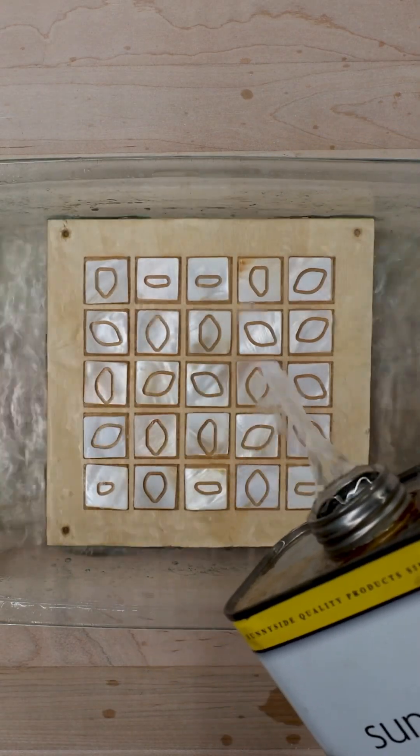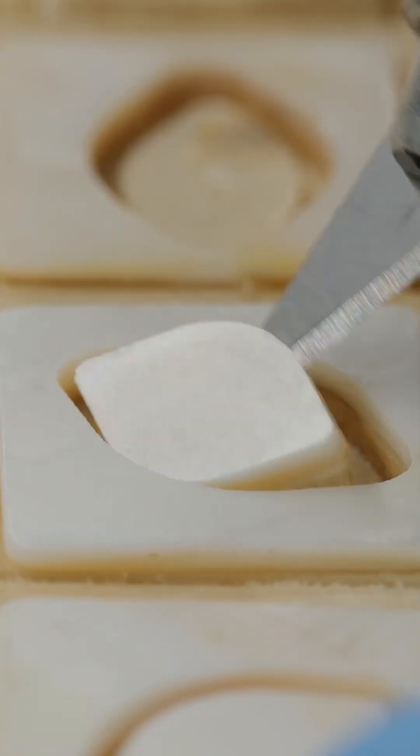Then let's soak each template in acetone to help loosen the CA glue. Now once you glue in all the pieces and clean things up...